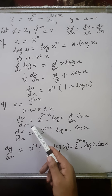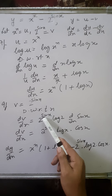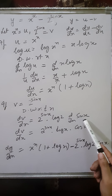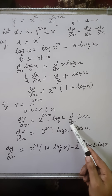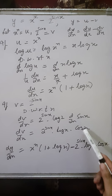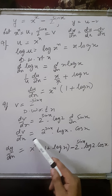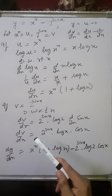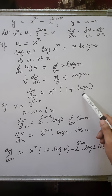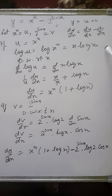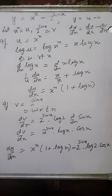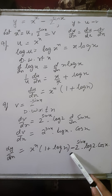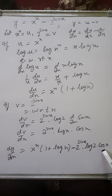Now for v equals 2^(sin x): we use the formula d/dx of a^x equals a^x log a. So dv/dx equals 2^(sin x) log 2, and by chain rule we differentiate sin x again, giving cos x. Therefore dv/dx equals 2^(sin x) log 2 cos x. Substituting du/dx and dv/dx back, the derivative of y is: dy/dx equals x^x (1 + log x) minus 2^(sin x) log 2 cos x.